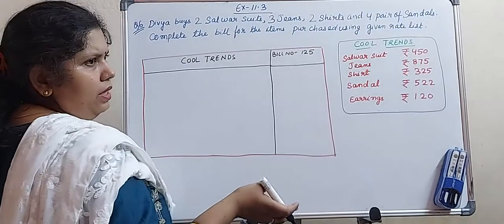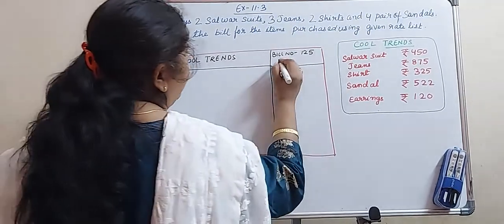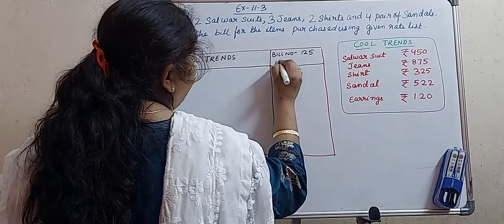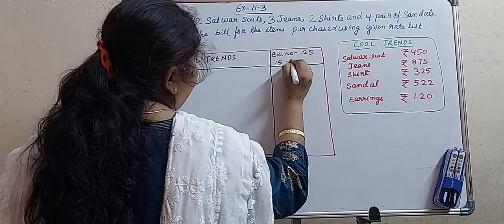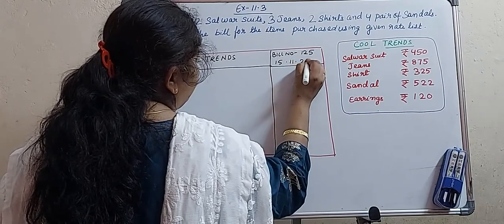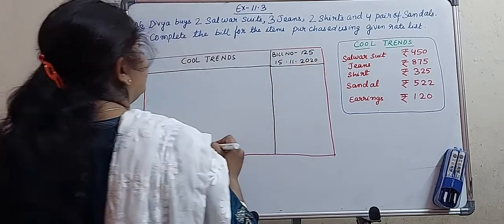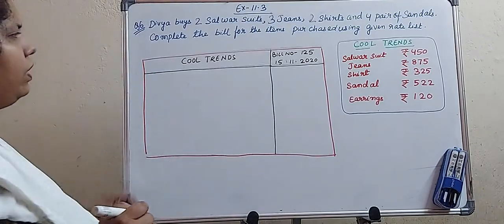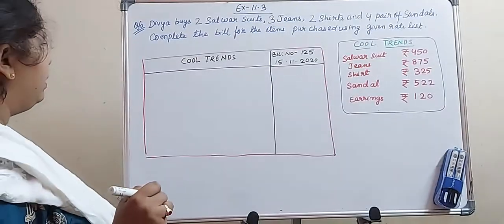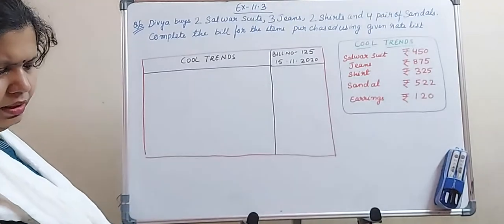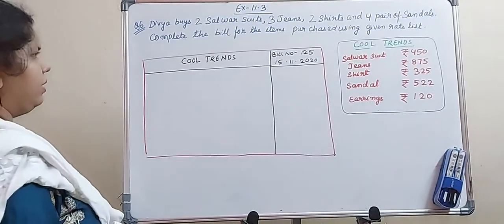Give today's date, which is 15 November — 15/11/2020. This is the date on which this bill is made. Now we will start mentioning the other things.